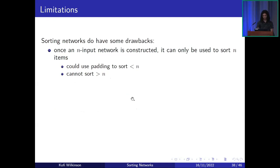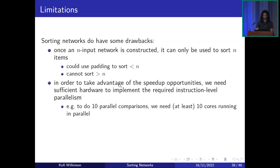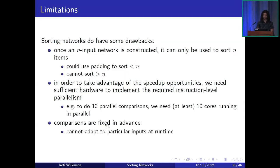Sorting networks do have some drawbacks. Once an n-input network is constructed, it can only sort exactly n items. If you want to sort fewer, you can use padding by adding arbitrarily large or small values, then selecting the k items of interest from the output — but there's nothing you can do to sort more than n. Also, to take full advantage of the speed-up, you need sufficient hardware to implement the required instruction-level parallelism — for example, 10 parallel comparisons require at least 10 cores. Finally, since the comparisons are fixed in advance, the network cannot adapt to particular inputs at runtime, unlike say the non-naive bubble sort, which can return faster on already-sorted input.